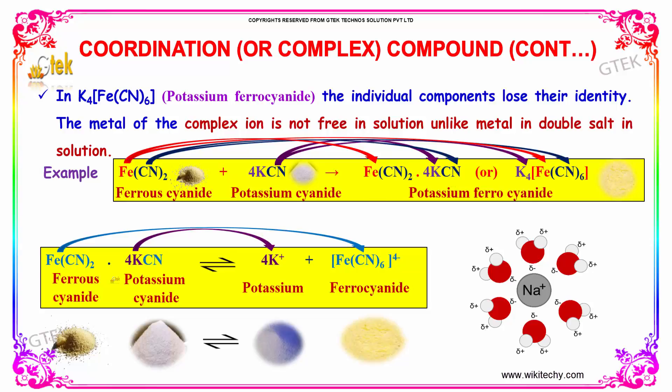When you get your potassium ferrocyanide, it will give you potassium and ferrocyanide ions. The individual components have lost their identity — you cannot retrieve each one separately.